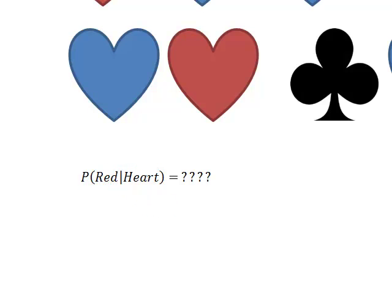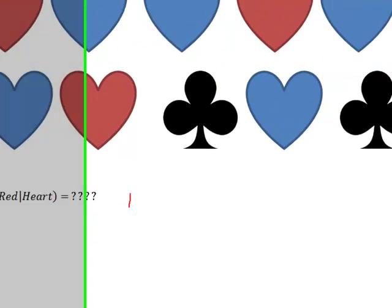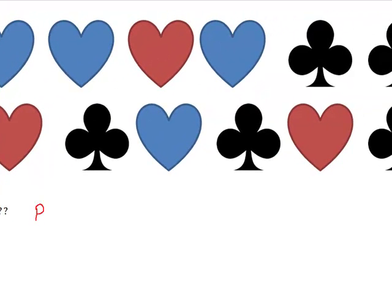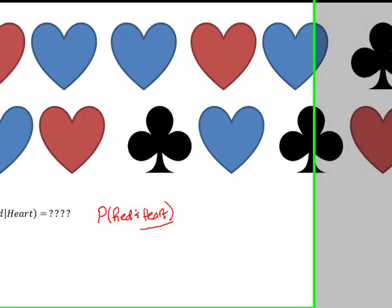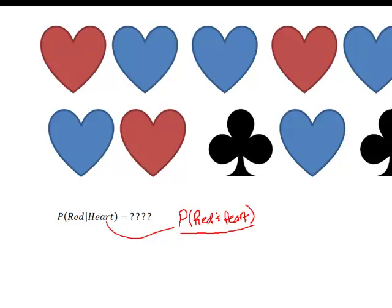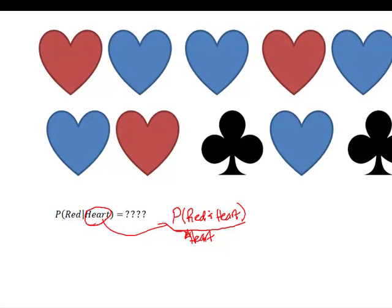So the other thing that I know is that conditional probability always works as the probability of red given a heart is always found as the probability of red and a heart divided by the probability of a heart. Because what goes behind the fence goes on the bottom down here.